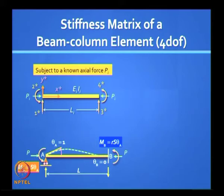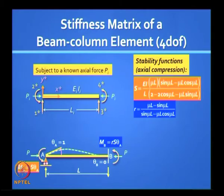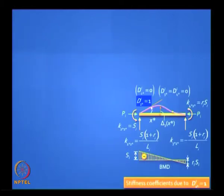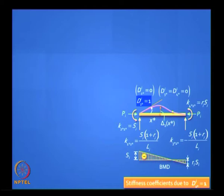If you write down the measures of flexural stiffness, they will take this form. Instead of 4EI/L, we have capital S. Instead of 2EI/L as a carryover moment, we have R times S, and these are called stability functions. They are trigonometric functions, and if you have a case of axial tension instead of compression, then you have them in a hyperbolic form. We can easily generate the stiffness coefficients corresponding to the four displacements, applying them one at a time. The easiest is when you have a unit rotation at one end: instead of 4EI/L you have S_i, and the carryover moment will be R_i times S_i.